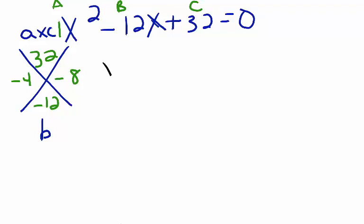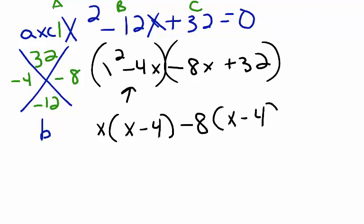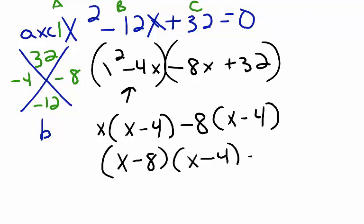So I have x squared minus 4x minus 8x plus 32. I can group the first two and the last two terms. From the first set of parentheses, I can factor out an x, leaving x minus 4. From the second set, I can factor out a negative 8, also leaving x minus 4. So now I have x minus 8 times x minus 4, all equal to 0.